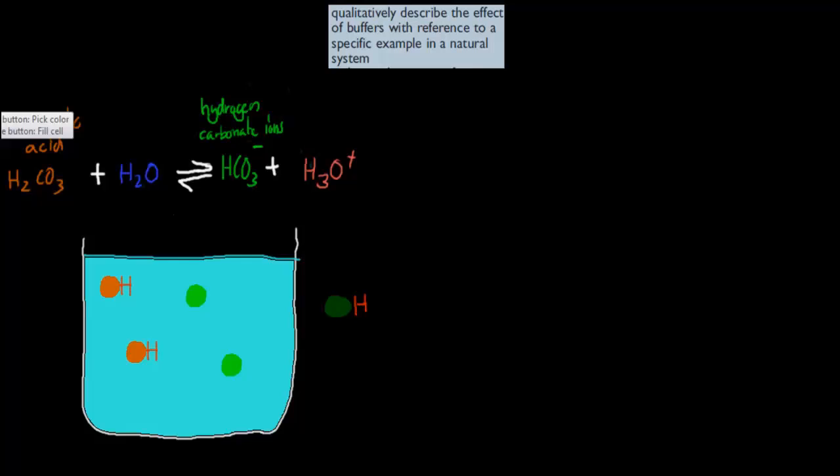So we have carbonic acid, H2CO3, plus water goes into hydrogen carbonate ions, HCO3-, plus hydronium ions, H3O+. In this case, carbonic acid will donate a hydrogen to water, so it is acting as the acid. And if this is the acid, then obviously the hydrogen carbonate ion will be its conjugate base. We said that the concentrations in a buffer would be equal.